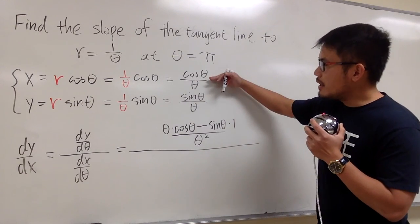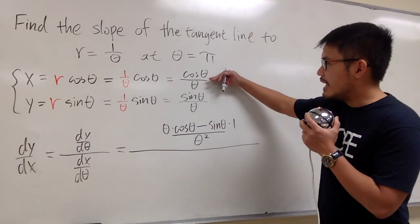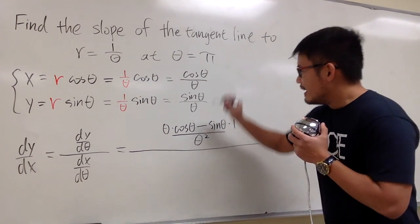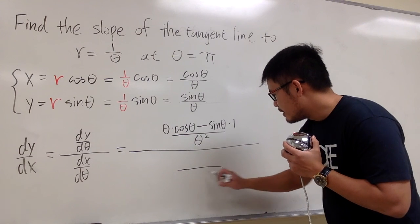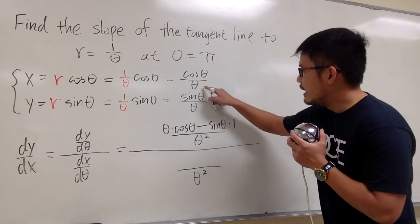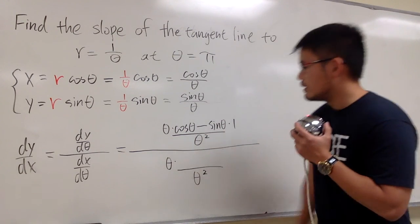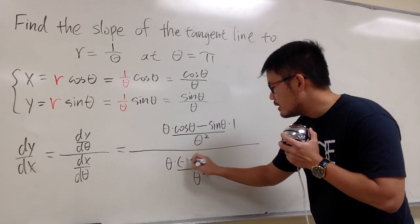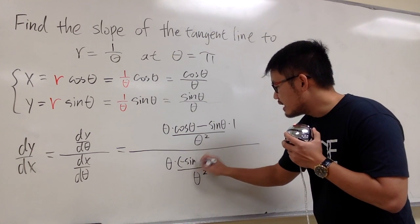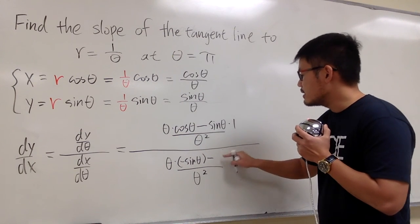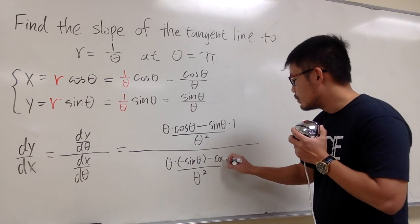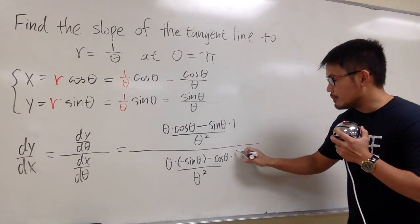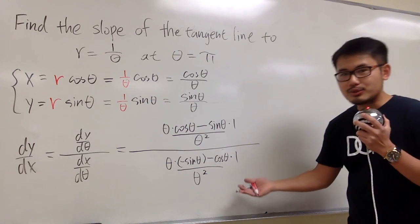For the x equation, cosine theta over theta, we take the derivative using the quotient rule as well. We square the denominator to get theta squared, keep the bottom function theta, times the derivative of cosine theta which is negative sine theta, and then subtract cosine theta times the derivative of the bottom, which is 1.